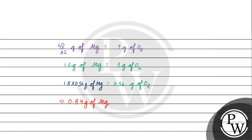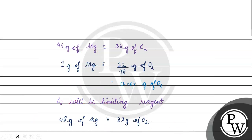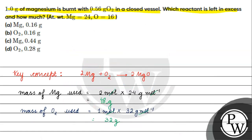Our question states 1 gram of magnesium is available. The amount of magnesium left in excess is 1 gram minus 0.84 grams, which gives 0.16 grams. The correct answer for this question will be option A. I hope you understood it well — thank you and all the best.